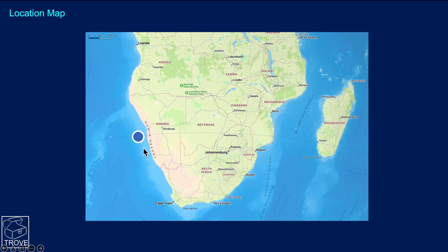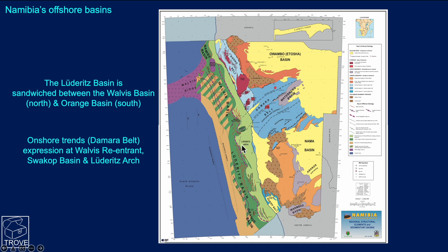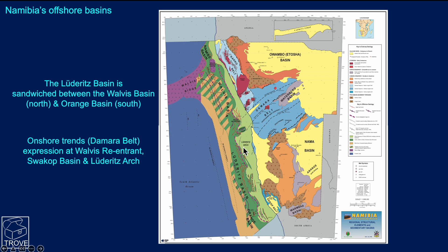Where and what is it? This is the location of the basin, offshore Namibia. On the map, the Lüderitz Basin is sandwiched between the Walvis Basin to the north and the Orange Basin to the south. This old feature, the Damara Belt, sets up this plunging nose here — the Lüderitz Arch — and also this small basin here, the Swakop Basin, and indeed the Walvis Reentrant.